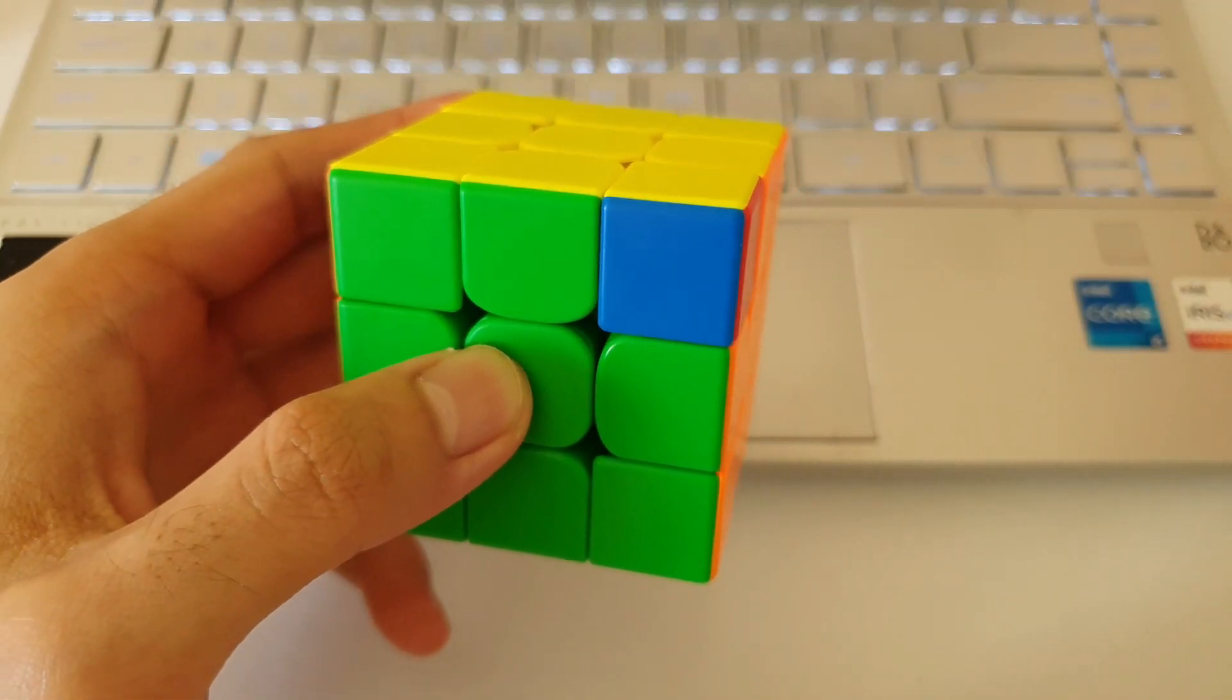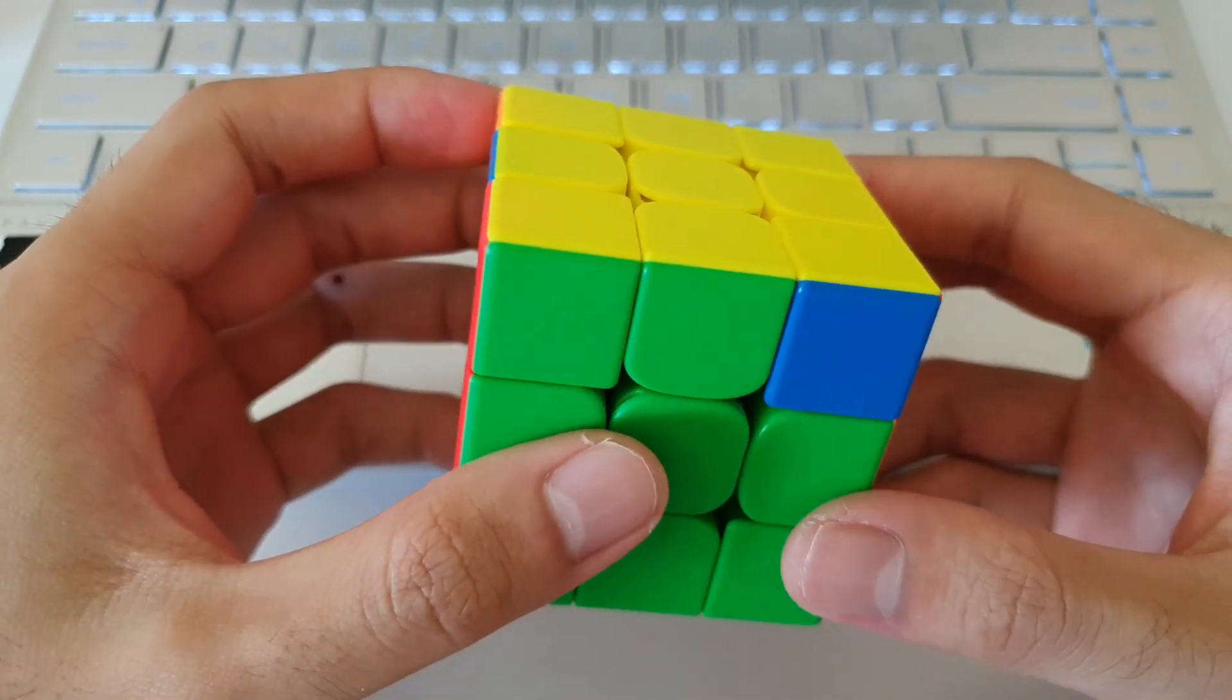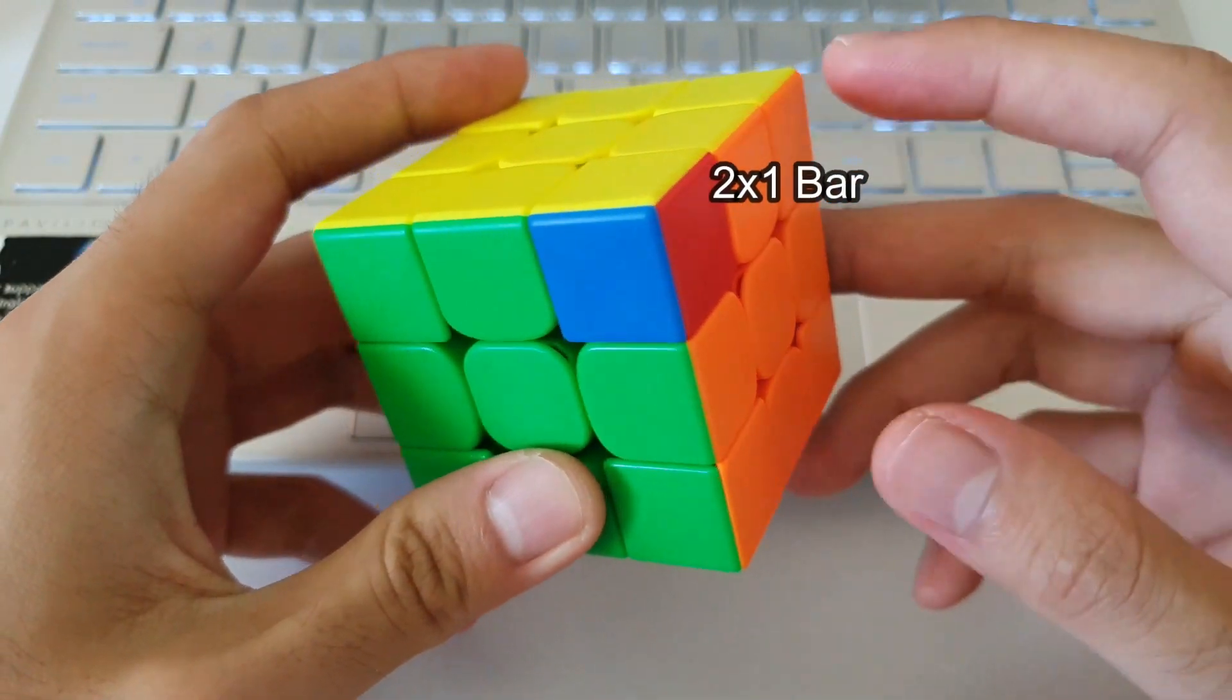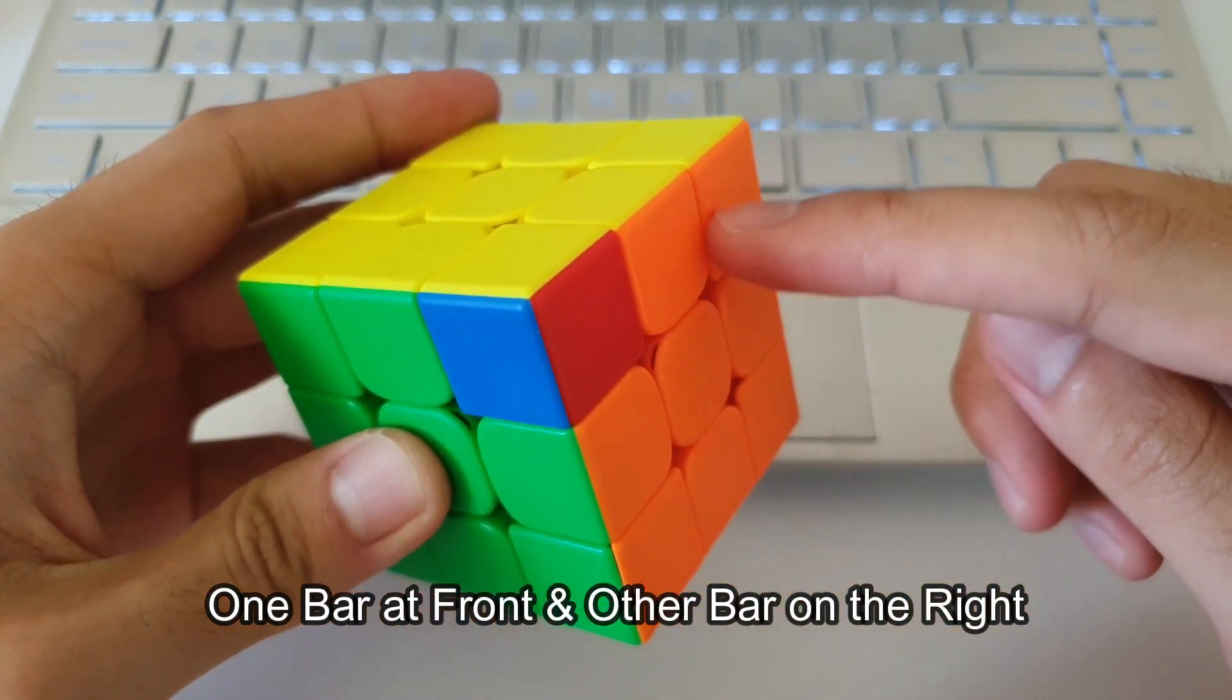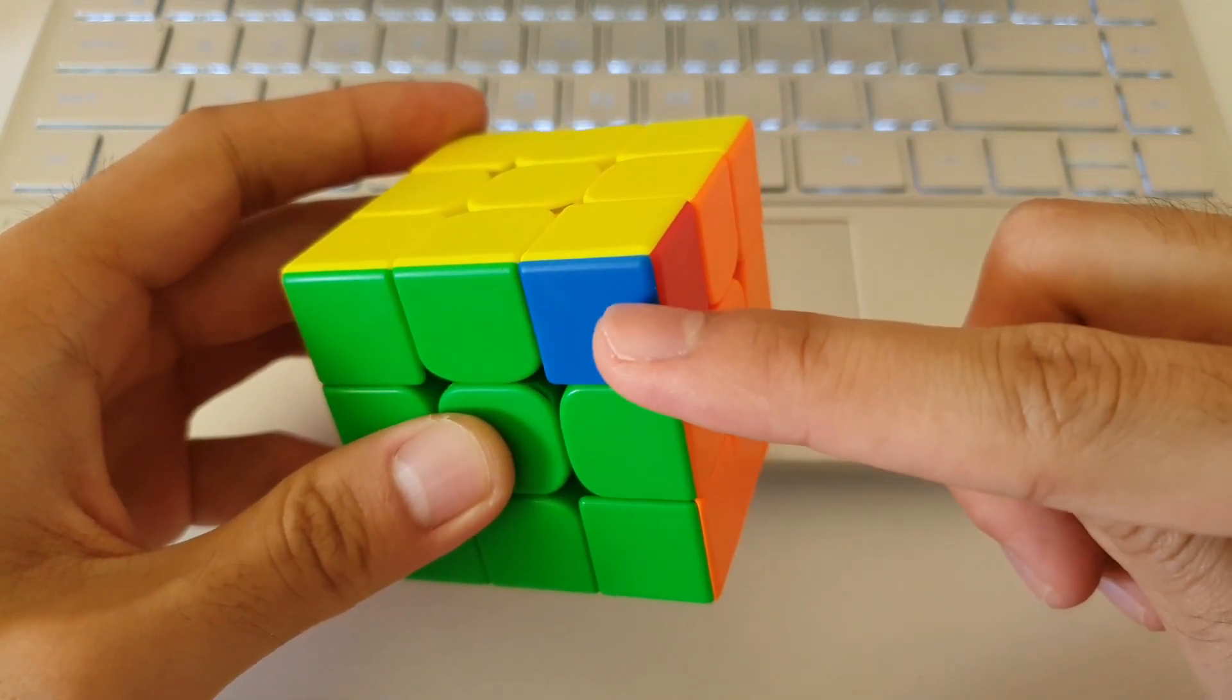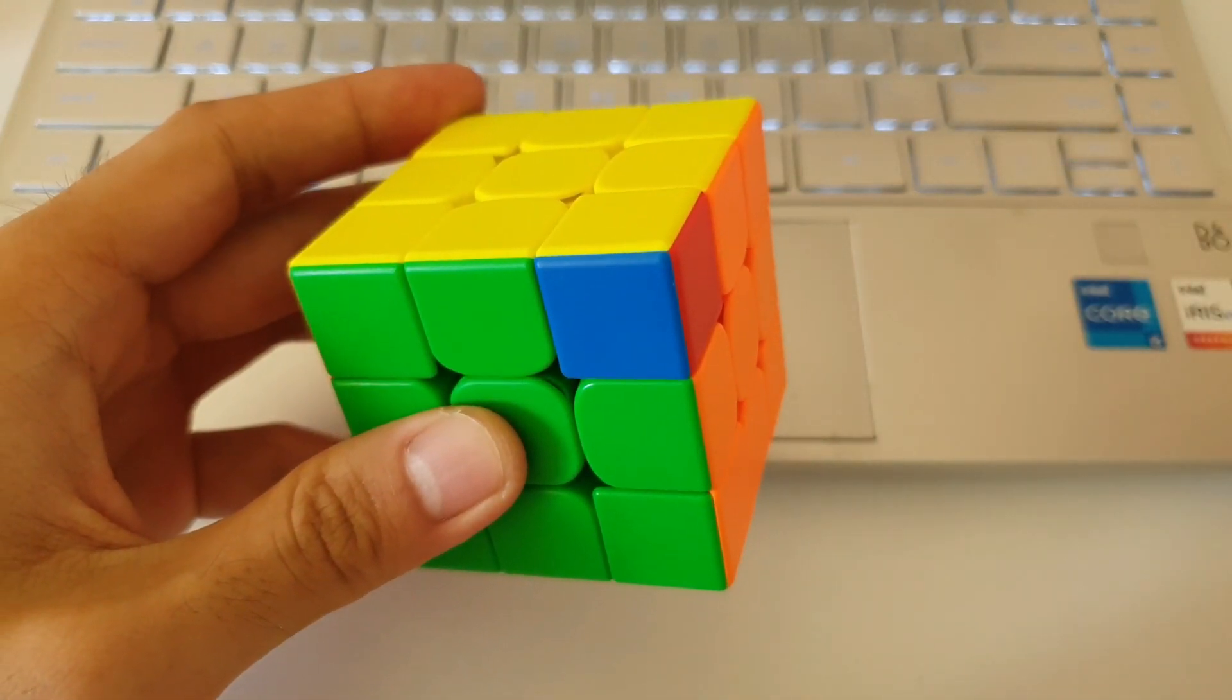So Y-perms are usually quite easy to recognize, especially if you get it from this angle. Y-perms can be recognized by having both of these 2x1 bars. So we usually hold it so that one of the bars is on the front and the other one is on the right side. You'll notice that there's a single corner with opposite colors in between the 2x1 bars. So when you see this sort of pattern, that's when you know you have a Y-perm.